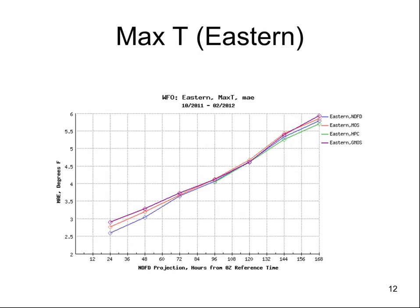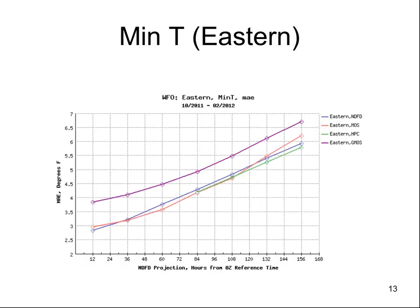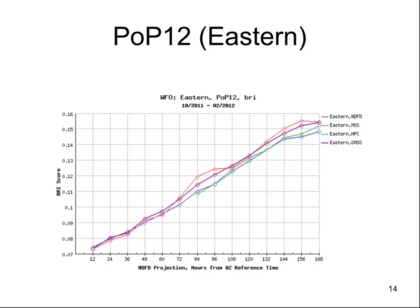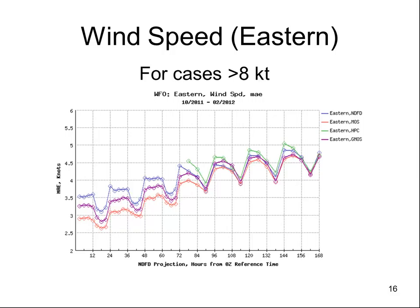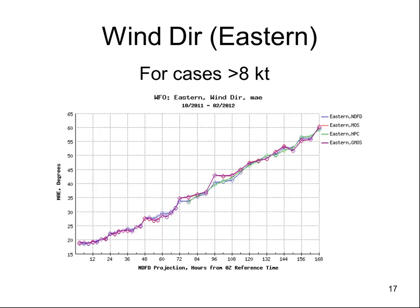Now stepping through the different regions. The Eastern Region MAX-T — NDFD is really tightly clustered in the extended; there's no real winner. For MIN-T, gridded MOS is a big outlier again, but HPC, NDFD, and MOS are all right on the same line. For POP-12, HPC and NDFD are basically tied — probably reflecting a strong reliance on HPC forecasts in the extended in the Eastern Region. Wind direction — everybody seems to be using the same guidance.